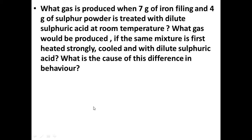Very good, Pratham. What is the cause of this difference in behaviour? Because when elements meet chemically, the properties of compounds are different from those of its constituents, while the properties of a mixture are the properties of its constituents — like iron and sulphur.